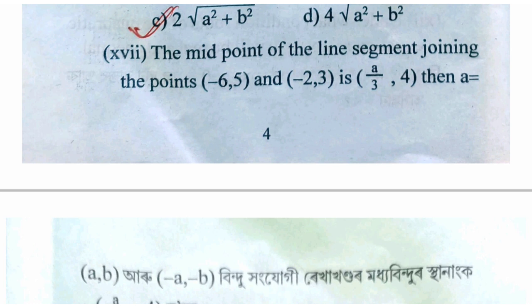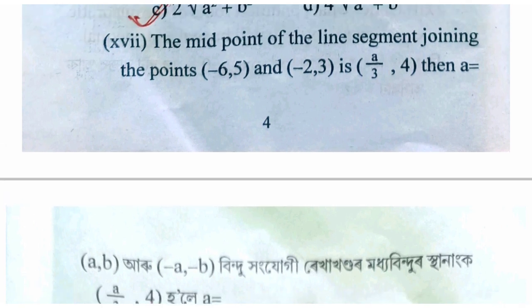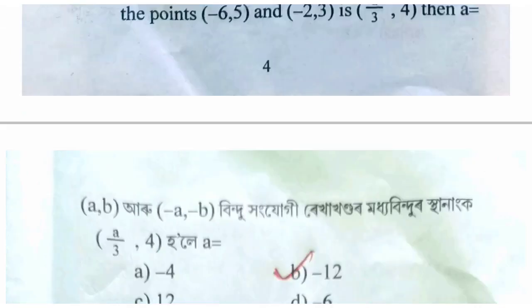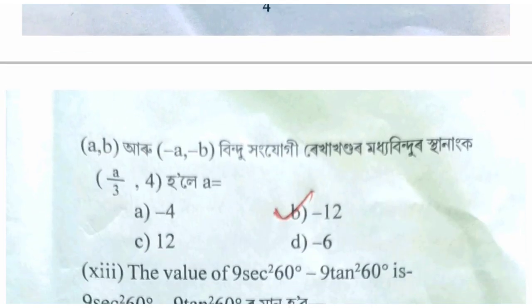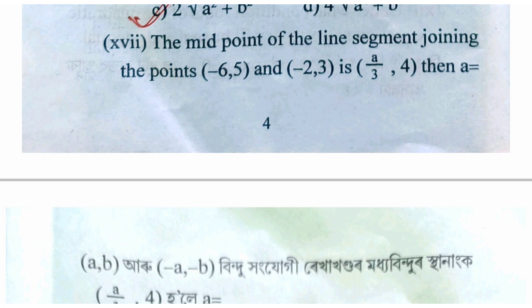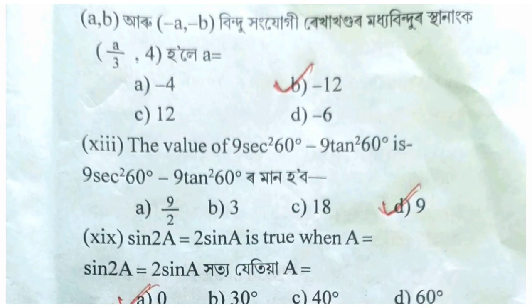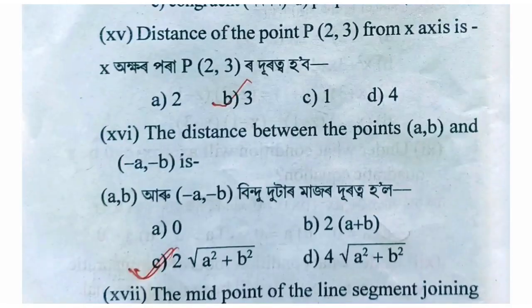The midpoint of the line segment joining the points (6, 5) and (minus 2, 3) is (a/3, 4), then find a. The midpoint of the line segment is calculated using the midpoint formula.